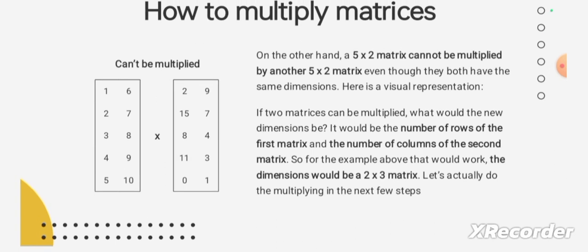Here is a counter example. On the other hand, a 5x2 matrix cannot be multiplied by another 5x2 matrix. Even though they both have the same dimension — that is, the same order — here is a visual representation. If two matrices can be multiplied, what would the new dimension be?